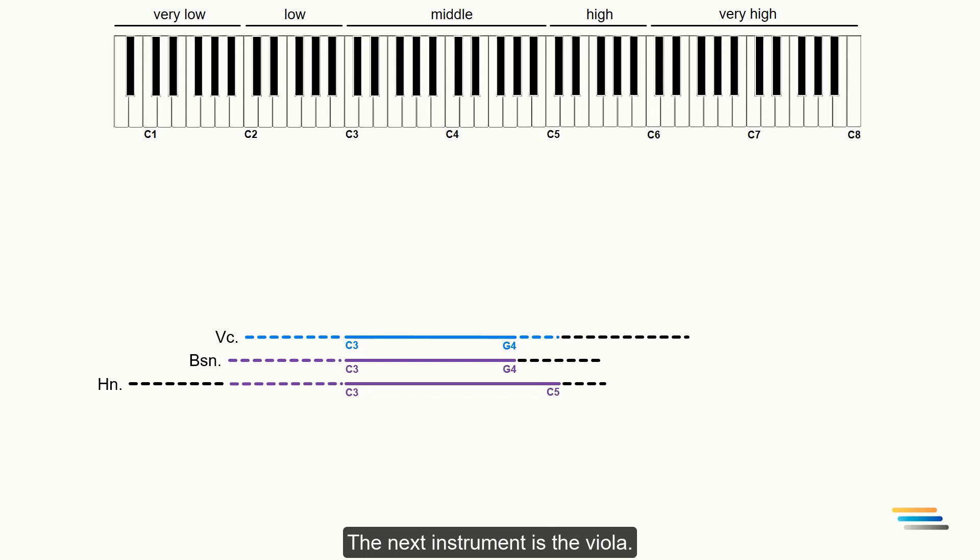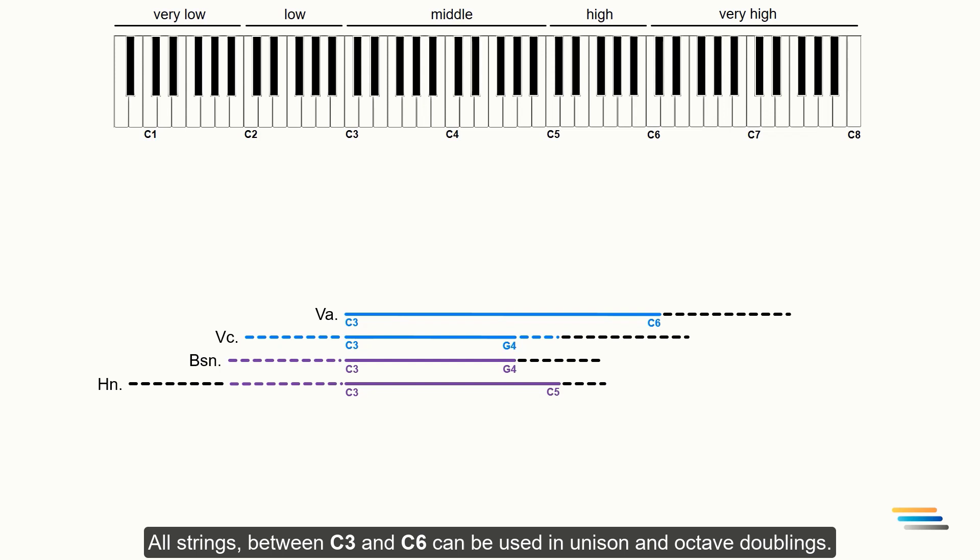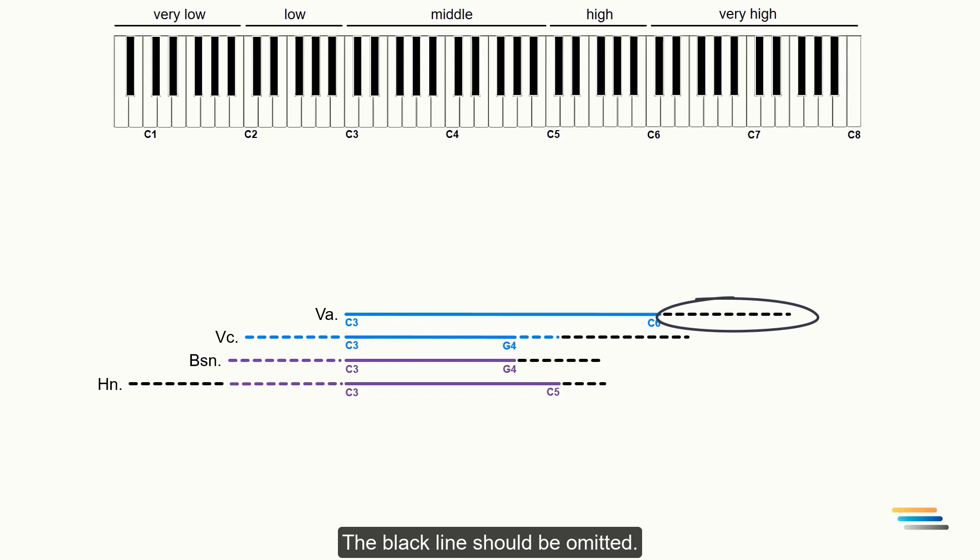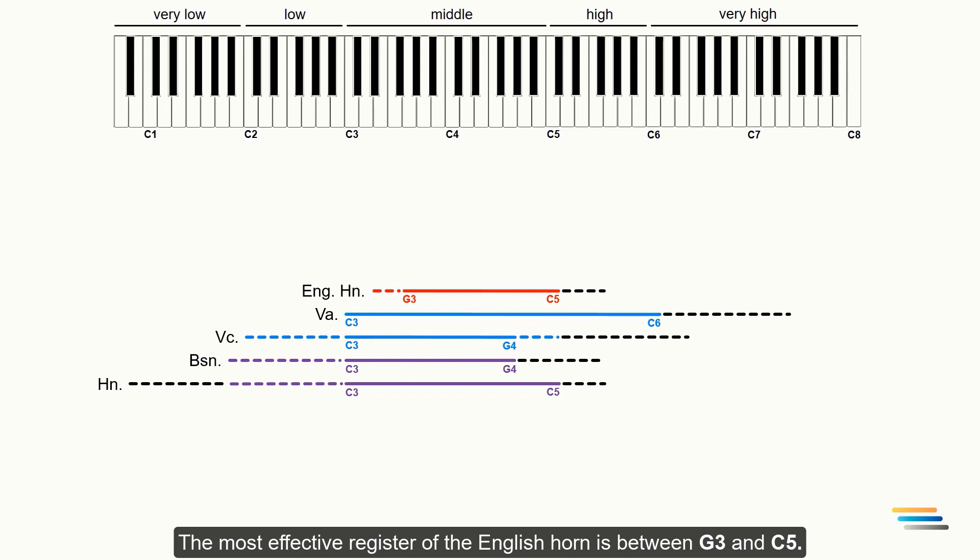The next instrument is the viola. All strings between C3 and C6 can be used in unison and octave doublings. The black line should be omitted. The most effective register of the English horn is between G3 and C5. The first register is the lower limit.